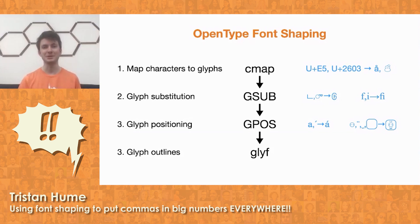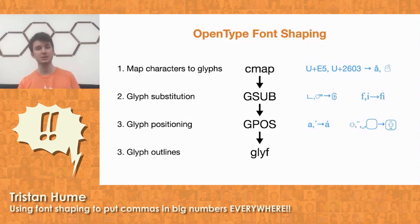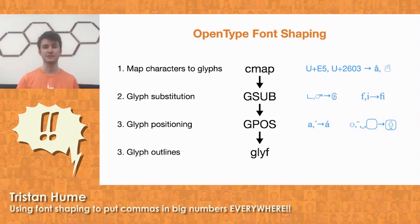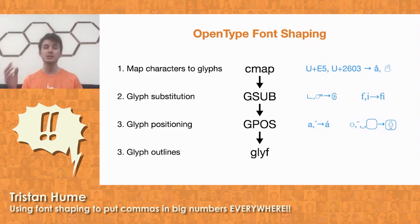I looked into the OpenType font shaping specification, which defines how all these things work. It says that things proceed in various stages controlled by tables within the font. First, the characters in the string are mapped to glyphs, which are internal things used by the font. Then glyph substitution rules replace sequences of glyphs with various other sequences of glyphs — for example, to do ligatures by combining glyphs together into a specialized ligature.